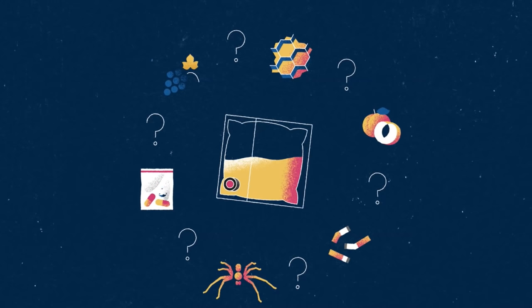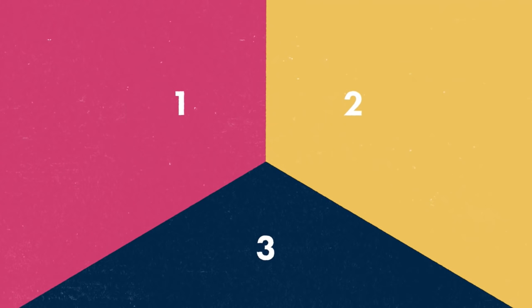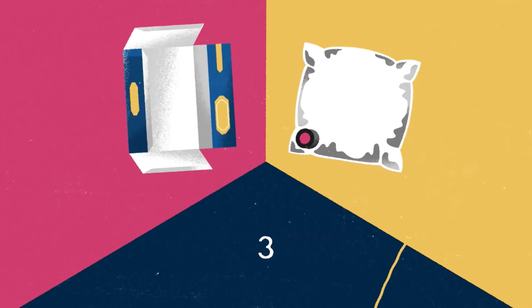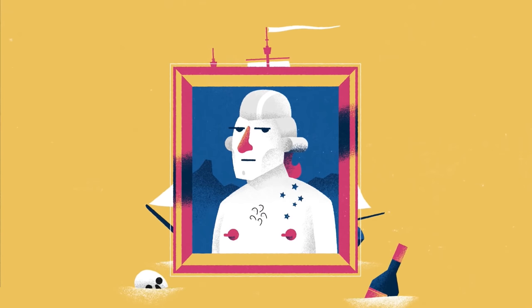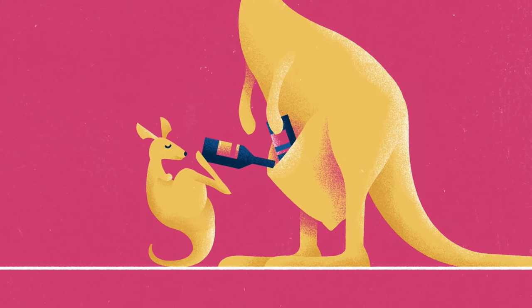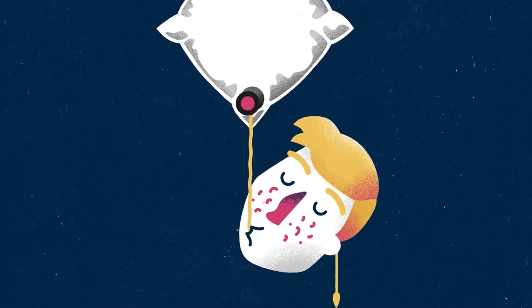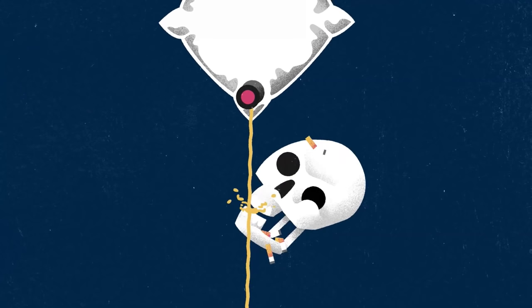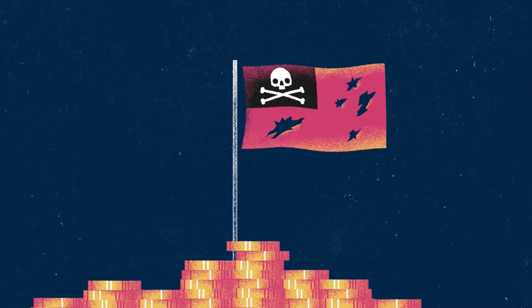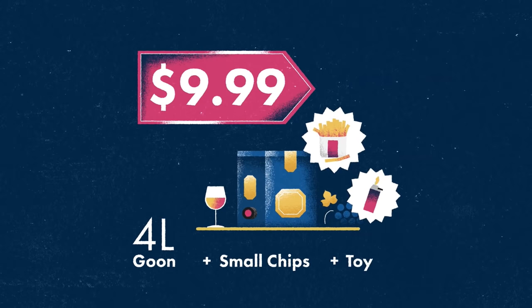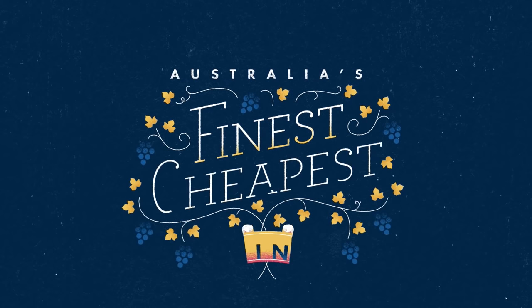All Goon is comprised of three elements: the box, the sack, and the Goon. The idea was born on the First Fleet by Sir Stanley James Goon, inspired by Australia's oldest drinking vessel, the Pouch. Today, Goon is enjoyed by Australians of all ages, helping to keep the nation's pride up and perception down. When you consider its incredible cost, Goon is unquestionably Australia's finest, cheapest wine.